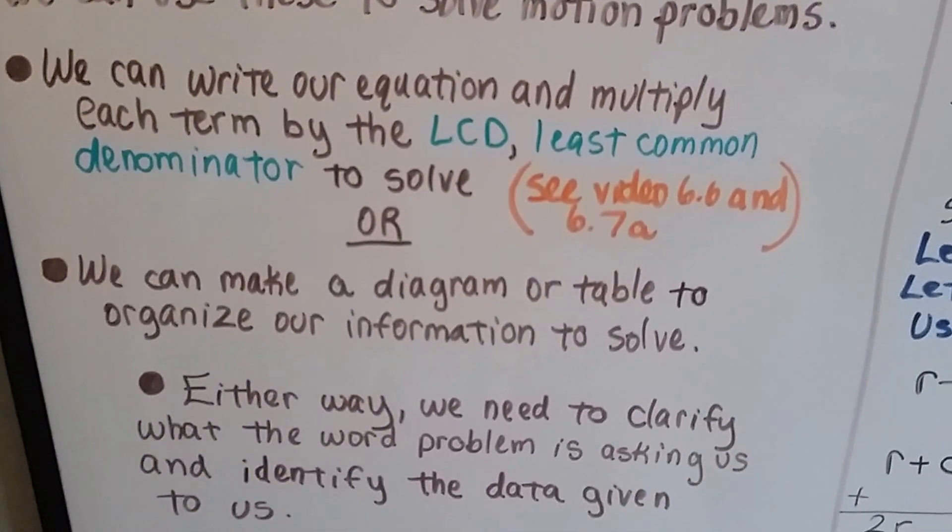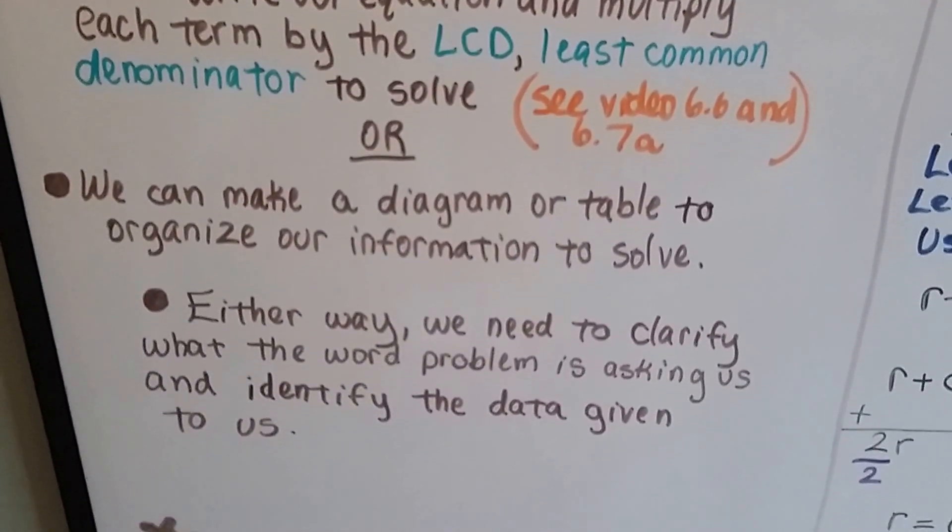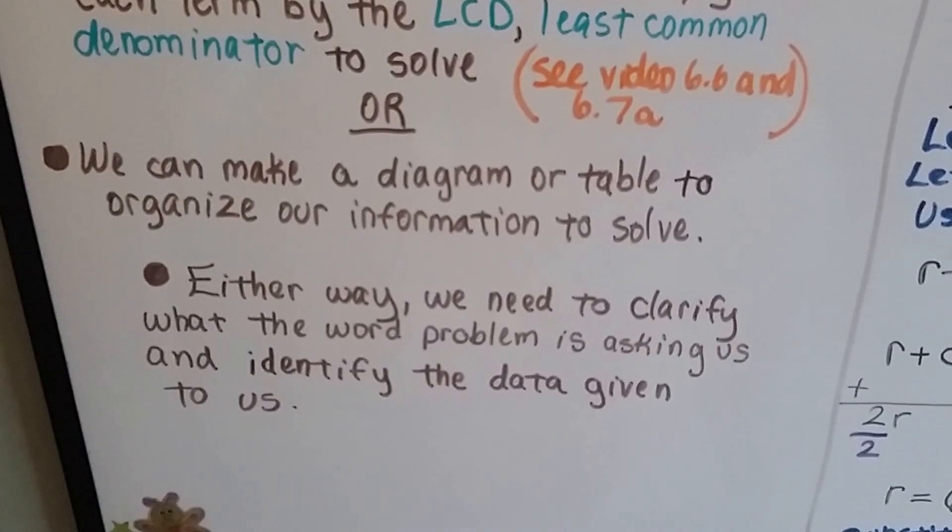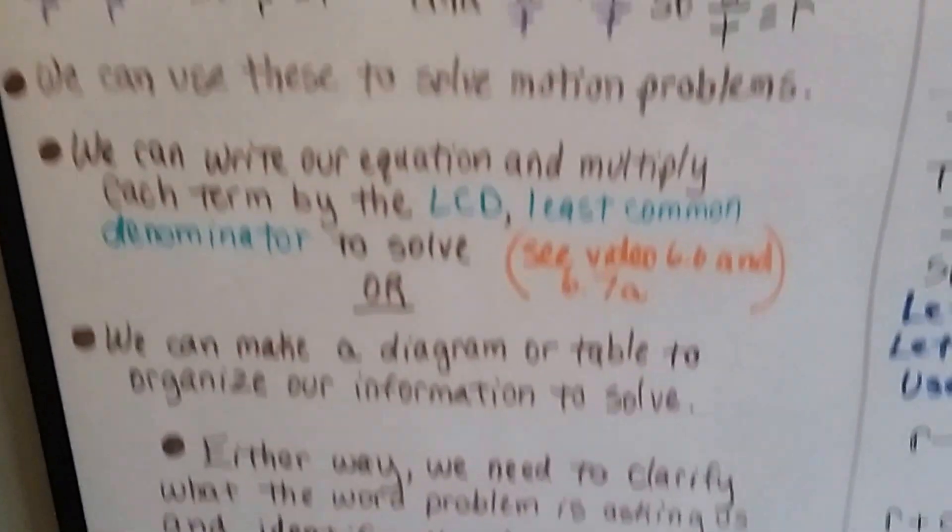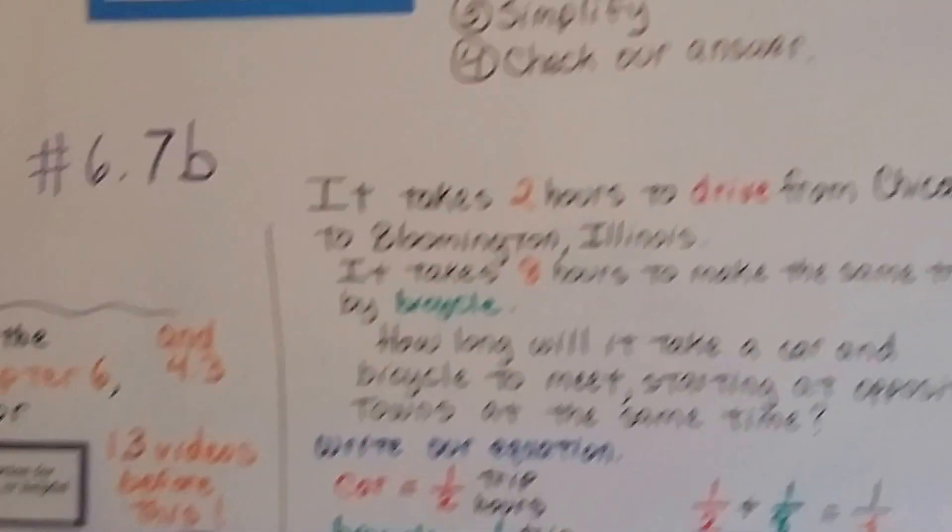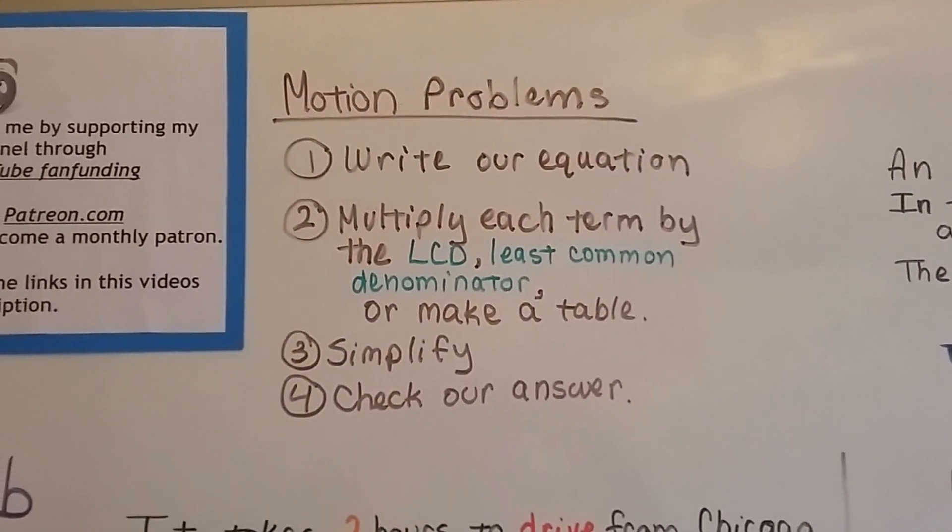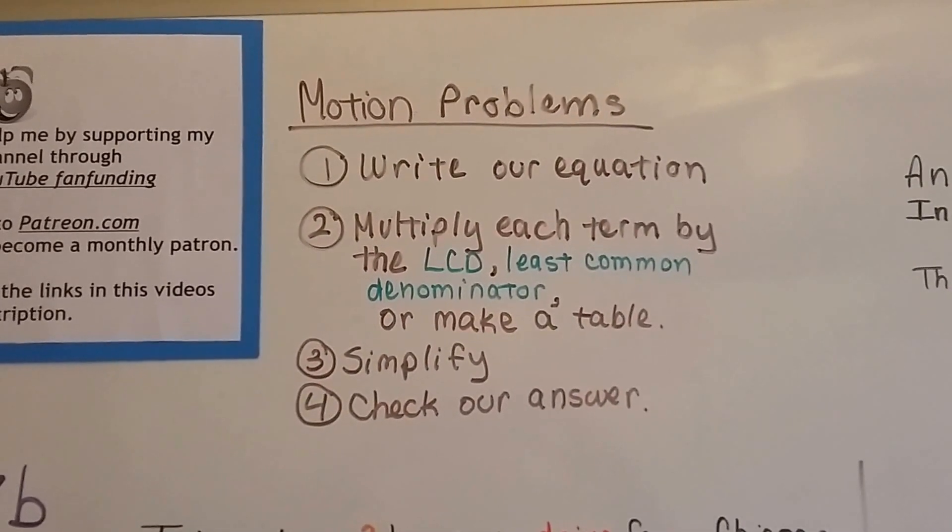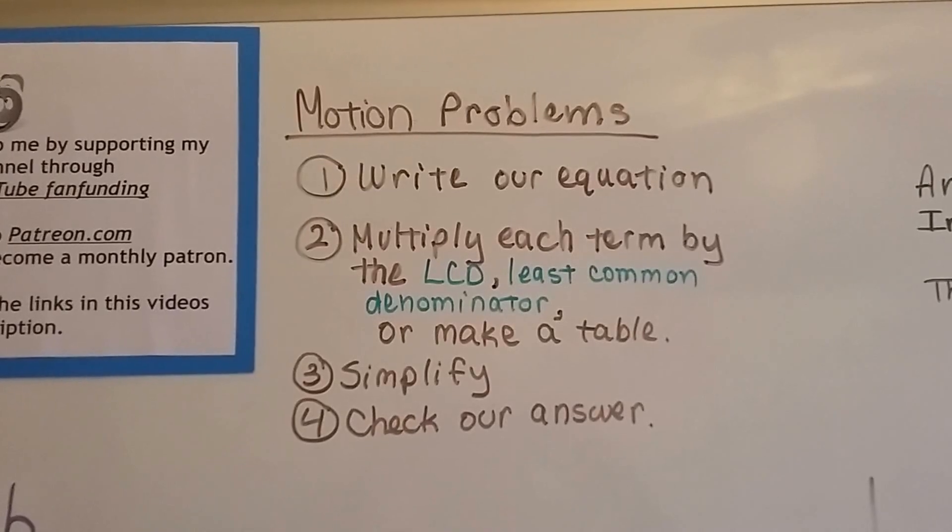We can also make a diagram or table to organize our information to solve it. We could even draw a picture. Either way, we need to clarify what the word problem is asking us and identify the data given to us. So the breakdown is we need to write our equation, multiply each term by that LCD, that least common denominator. We can make a table or draw a picture. We simplify it and we check our answer.